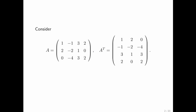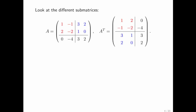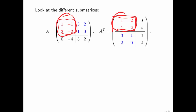Let's consider a matrix A and its transpose. Here we partition both A and A transpose. Let's focus on the red elements — this particular submatrix has the same elements as the corresponding submatrix of A transpose, except that this matrix is transposed to become that corresponding submatrix of A transpose.